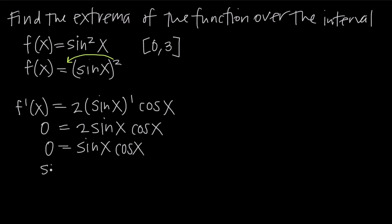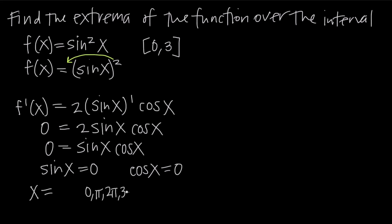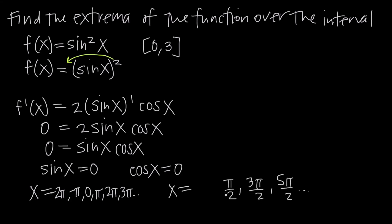From the unit circle, sine of x equals zero when x equals 0, pi, 2pi, 3pi, etc., and also at negative pi, negative 2pi, and so on. Cosine of x equals zero when x equals pi/2, 3pi/2, 5pi/2, and so on, and in the negative direction at negative pi/2, negative 3pi/2, etc. All of these values are potential critical points.